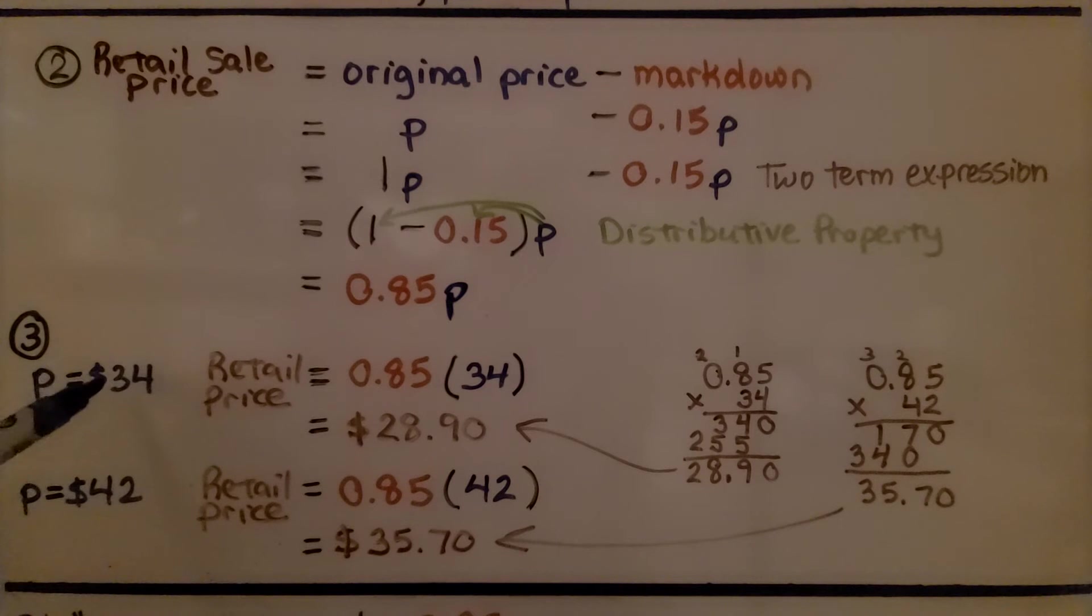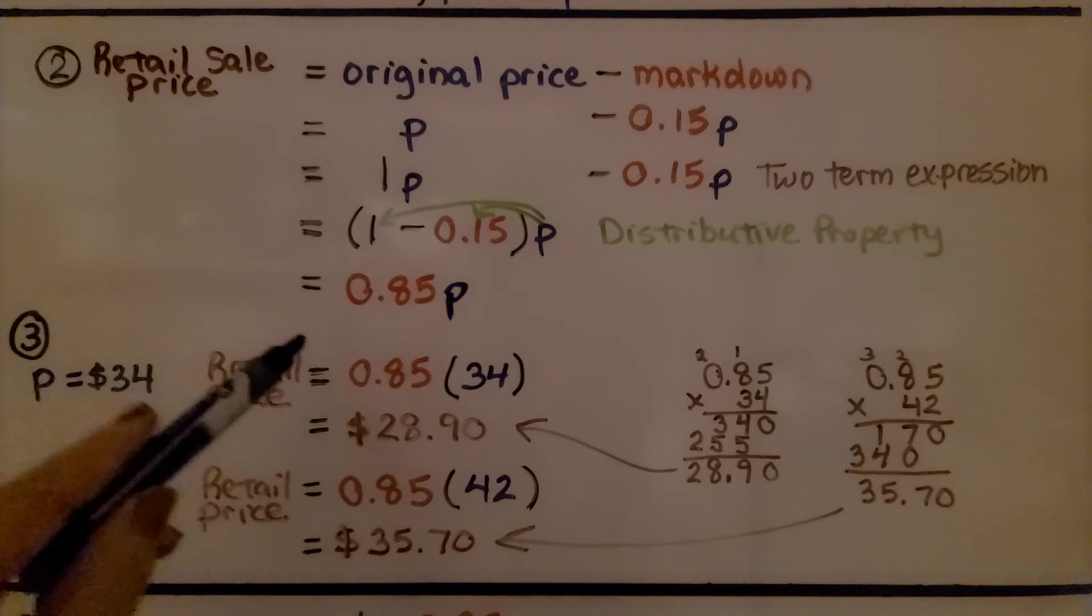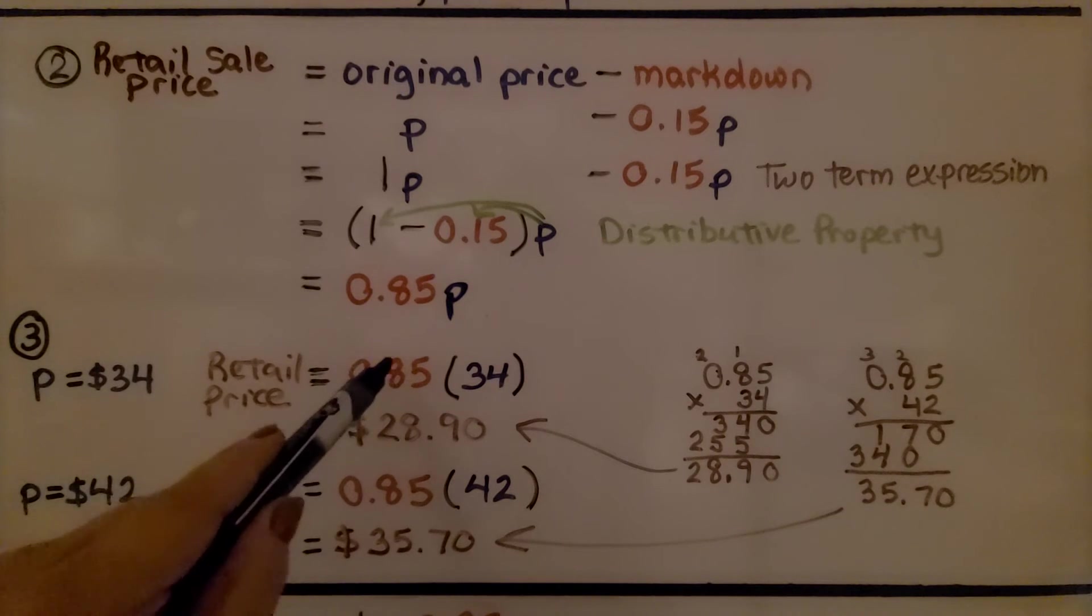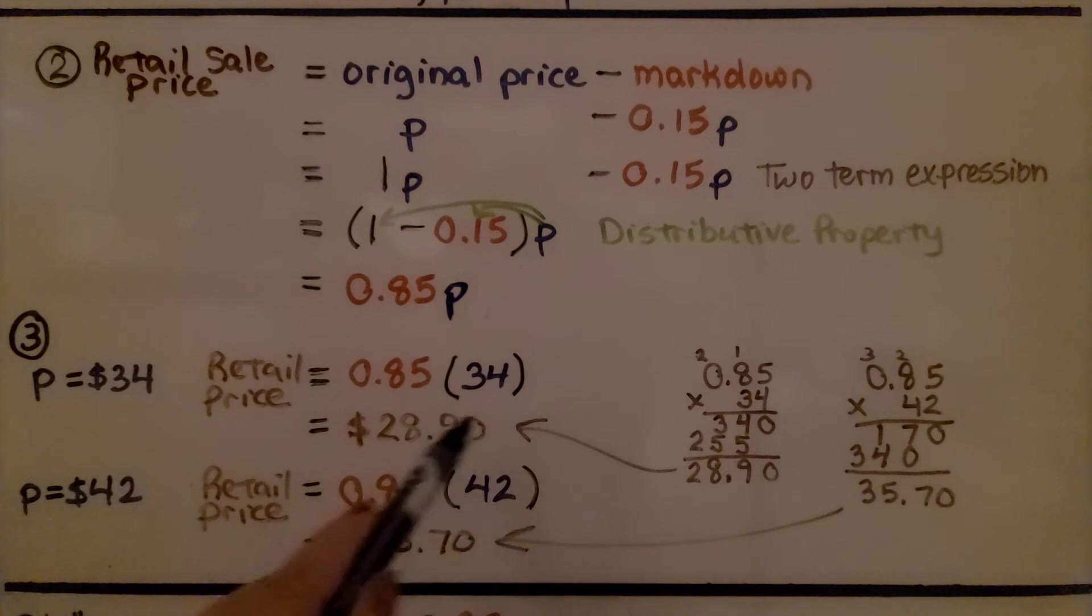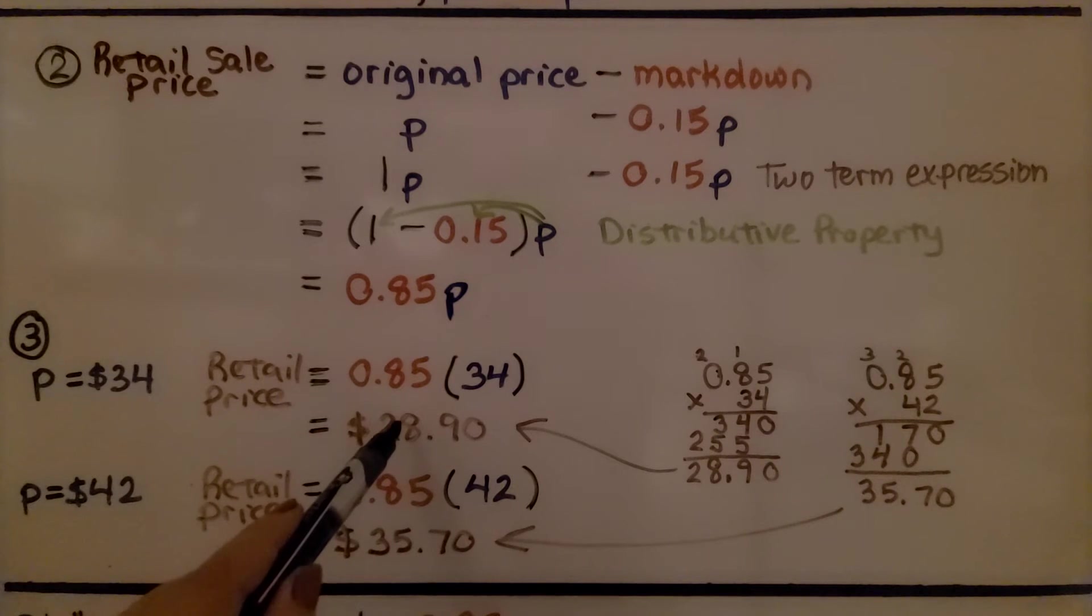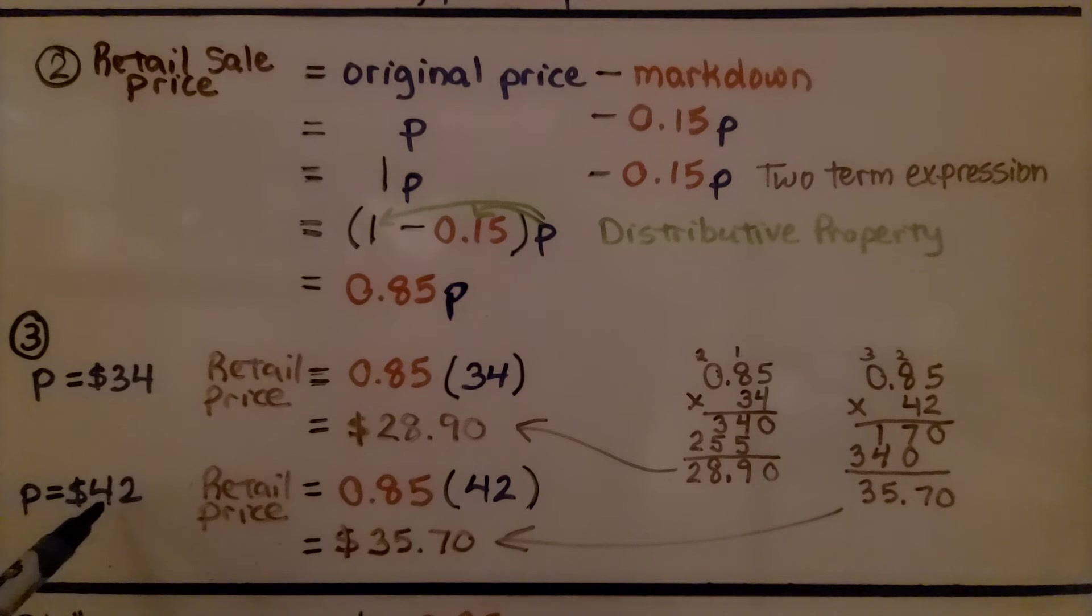So if we have the $34 pair of pants, we're going to multiply 0.85 times 34. That's going to give us $28.90 for our retail sale price.